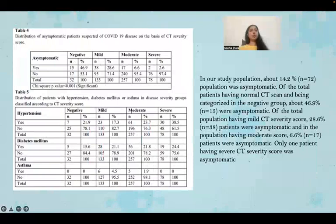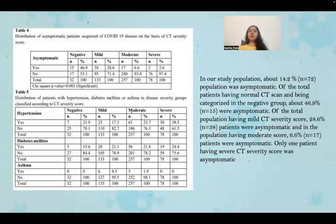Table four shows the distribution of asymptomatic patients suspected of COVID-19 disease by CT severity score. About 14.2% — that is, 72 people — were asymptomatic. Of patients with a normal CT scan in the negative group, about 46.9% were asymptomatic. Of those with mild CT severity, 28.6% were asymptomatic; in the moderate group, 6.6% were asymptomatic. Only one patient with a severe CT score was asymptomatic.